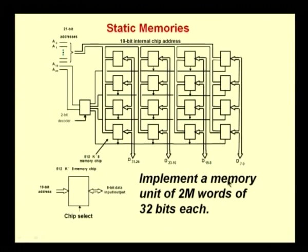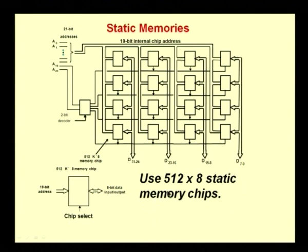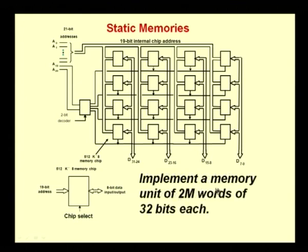Let us take an example: we want to implement a memory unit of 2 mega words of 32 bits each, using 512 by 8 static memory chips. Each word is 32 bits. We will use static memory organization for illustration — the same structure applies to dynamic memory as well. So using 512 by 8 static memory chips, we want to construct a memory which has 2 mega words of 32 bits each.